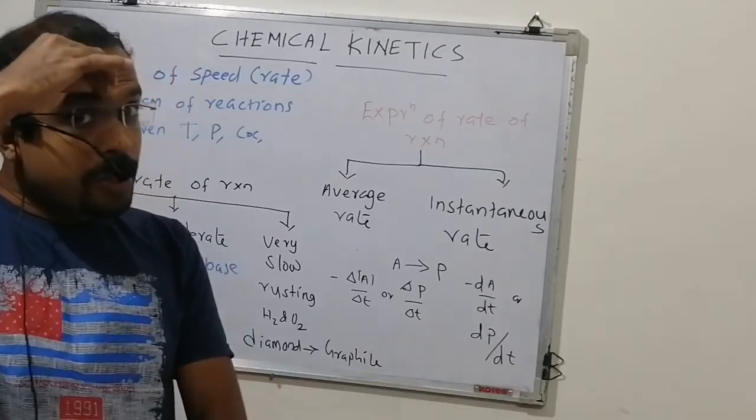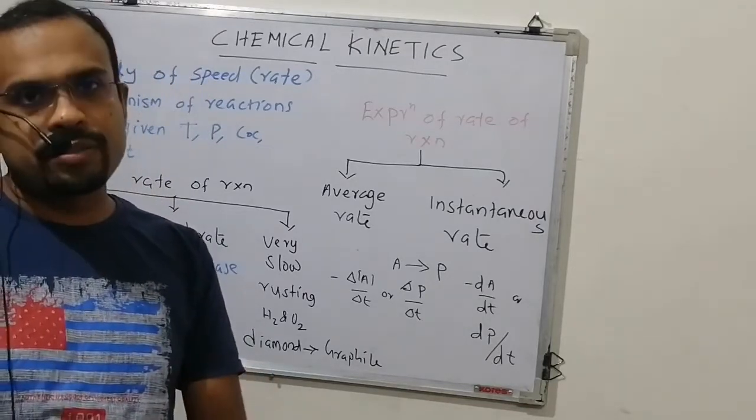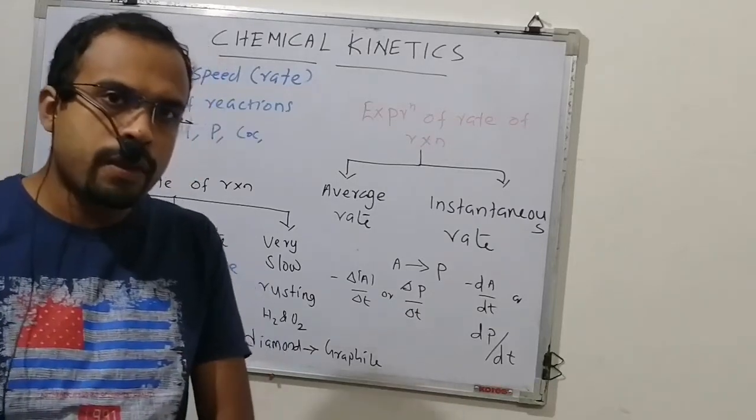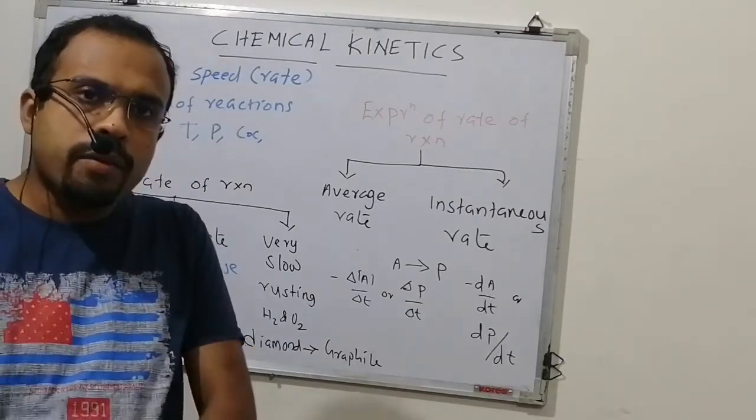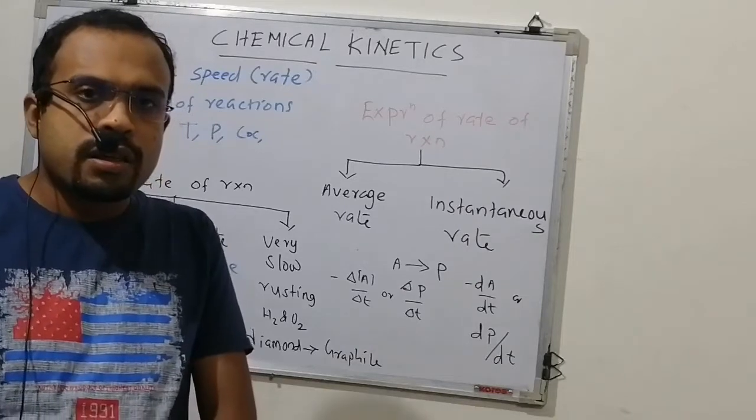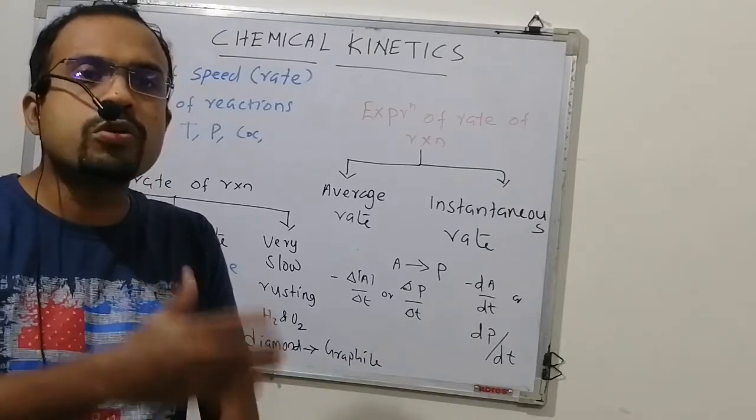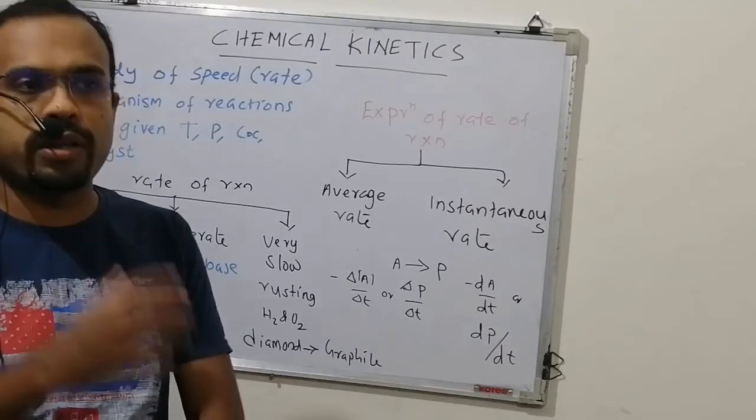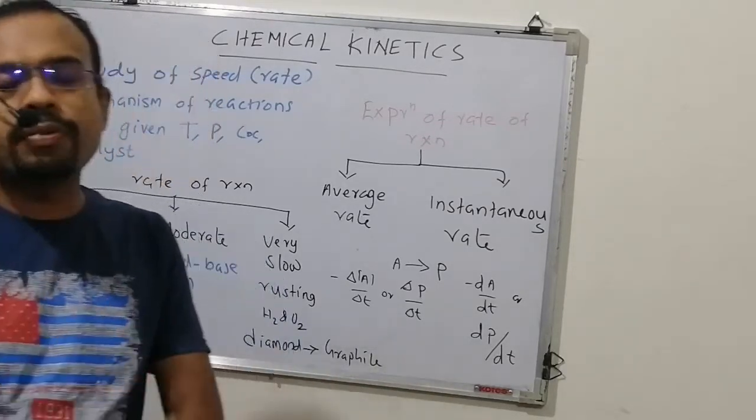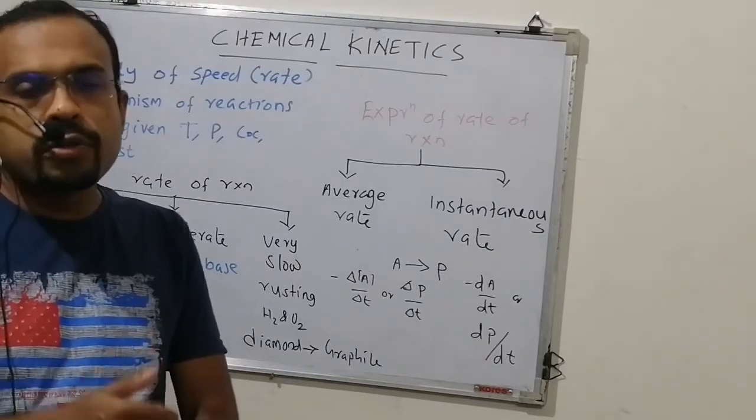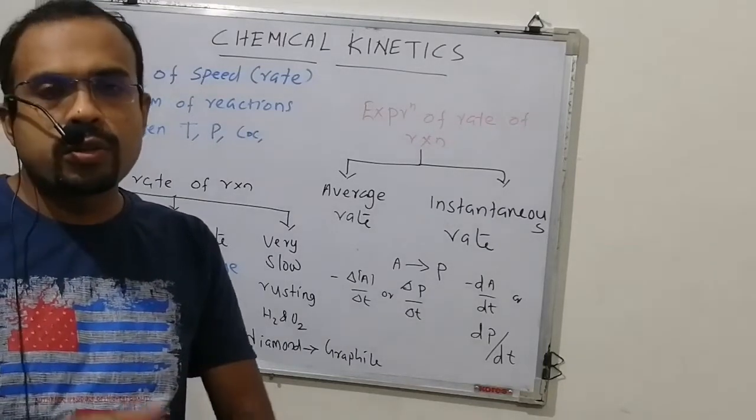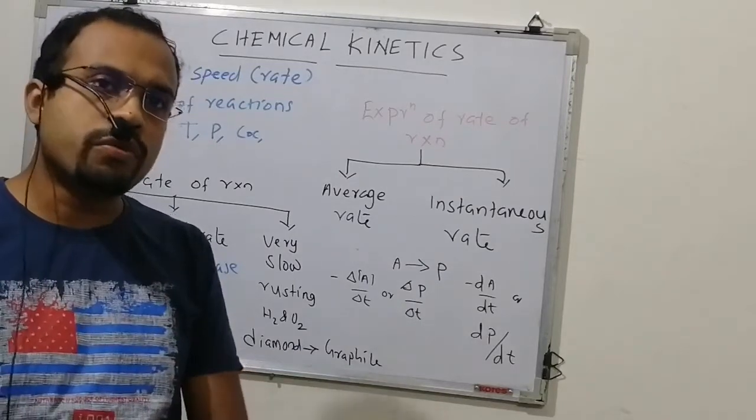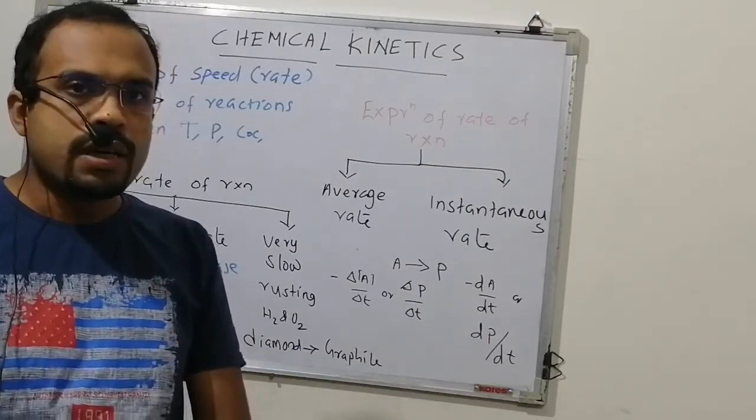Similarly, you may have a diamond. You think that the costly diamond is stable. But if you look at the thermodynamic perspective, conversion of diamond to graphite is delta G negative and spontaneous. But that does not happen when you wear a diamond ring on your finger because its speed is very, very low.